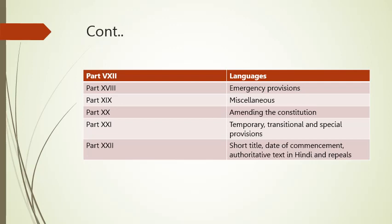Part nineteen explains miscellaneous things. Part twenty explains amending the Constitution — that's how the Constitution will be amended. Part twenty-one explains temporary, transitional, and special provisions. Part twenty-two explains short titles, date of commencement, text in Hindi, and repeal.